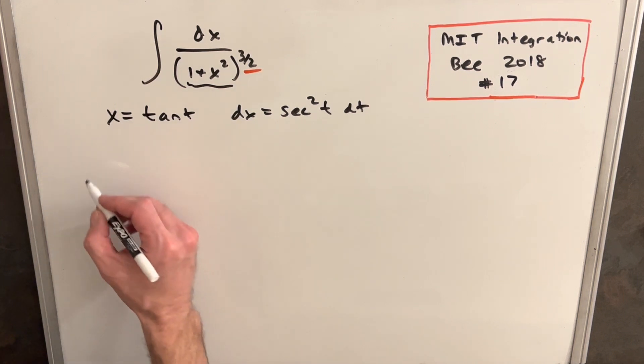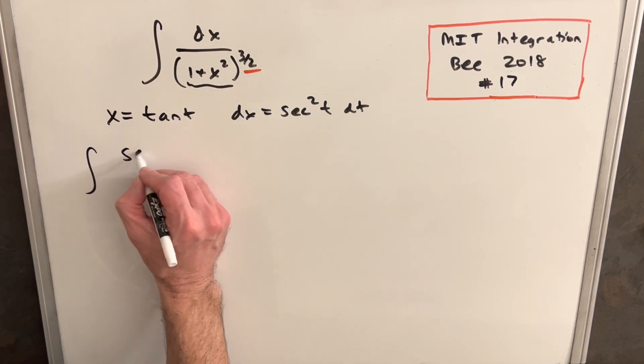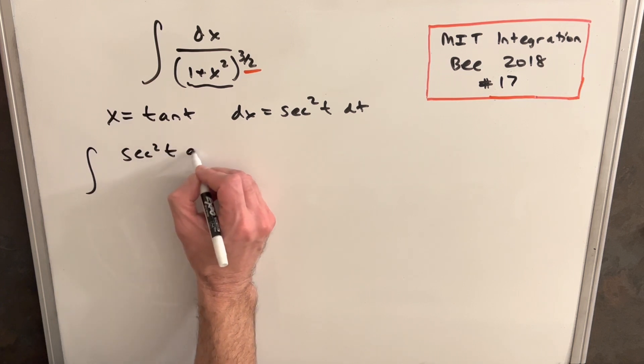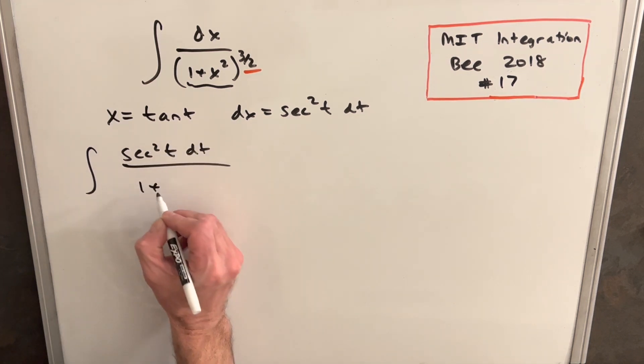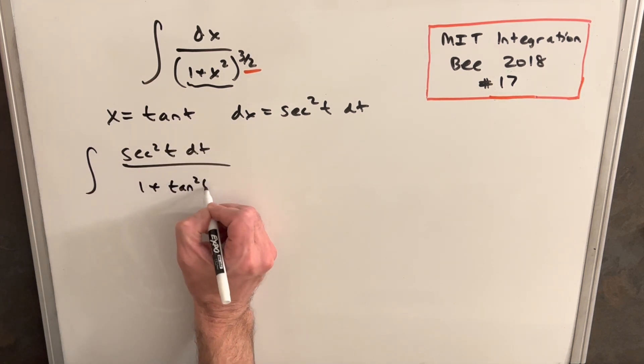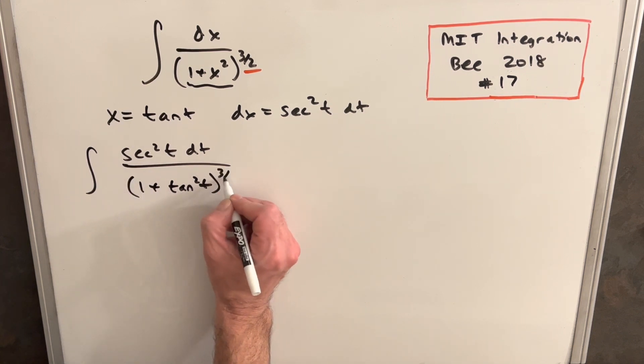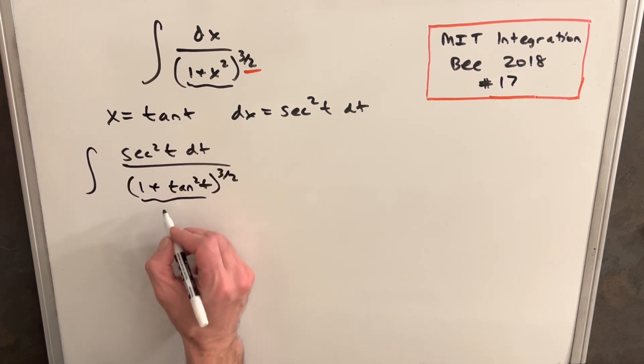So we can make our substitution and see how this goes. We'll substitute in our dx, we're going to have secant squared t. And then we'll have our one plus tan squared t to the three halves power. And the fortunate thing, this is actually just secant squared. And that's where our simplification is going to come in.